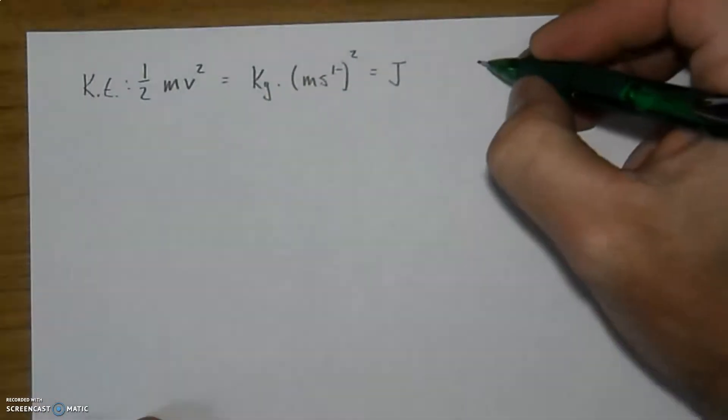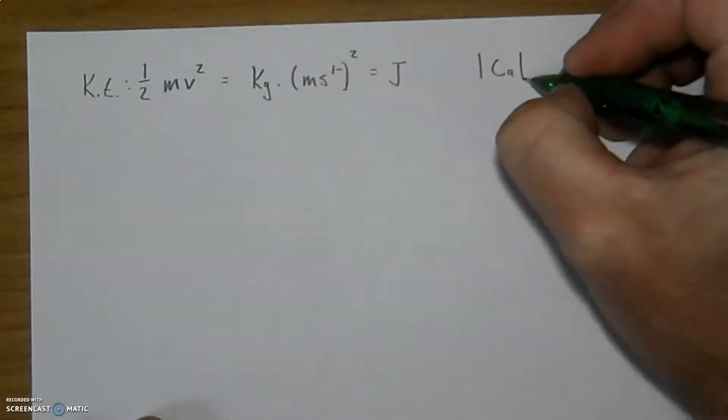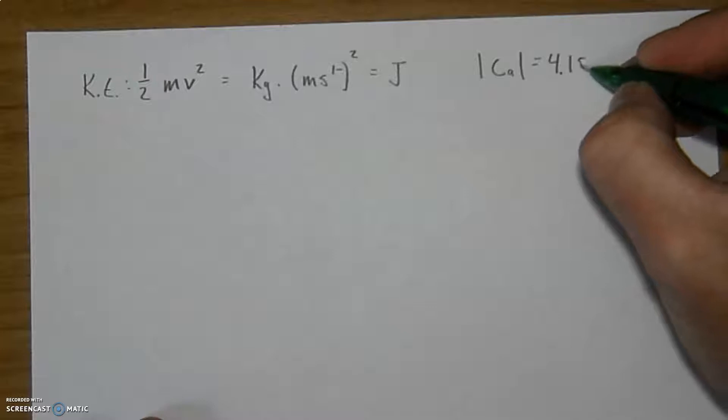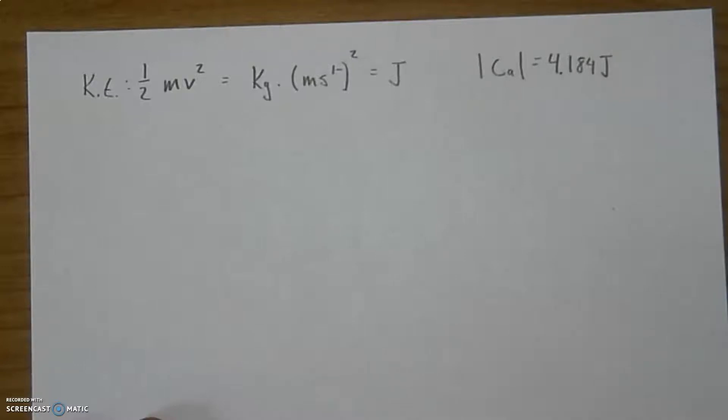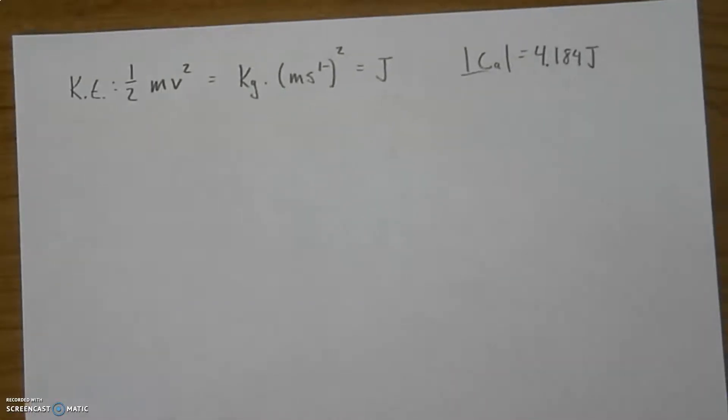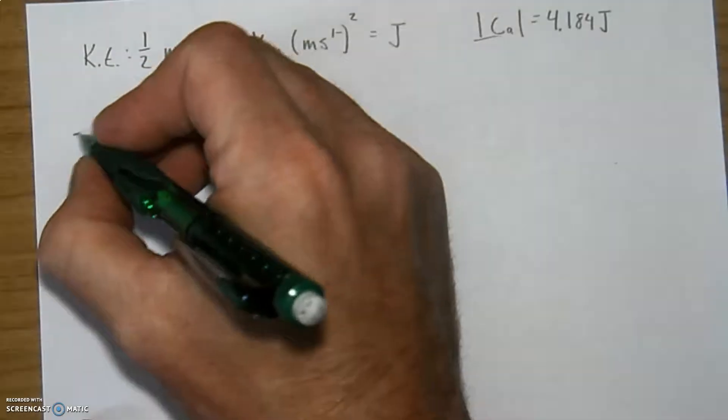Another way that you're probably most familiar with energy is just the calorie. And one calorie happens to be equal to 4.184 joules. And that number may be familiar to you because both of these are the energy required to heat one milliliter or gram of water by one degree Celsius. And it's one calorie of energy.